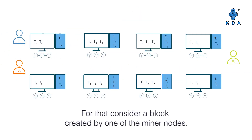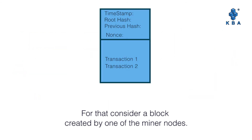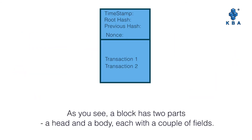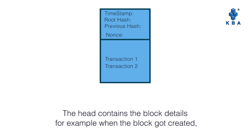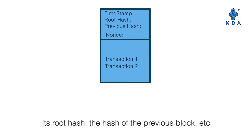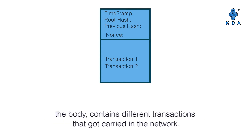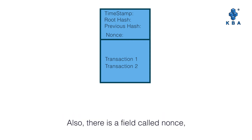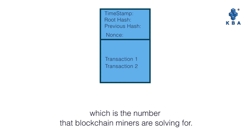Consider a block created by one of the miner nodes. As you see, a block has two parts: a header and a body, each with a couple of fields. The header contains the block details — for example, when the block was created, its root hash, the hash of the previous block, etc. The body contains the different transactions carried in the network. Also, there is a field called Nonce, which is a number that the blockchain miners are solving for.